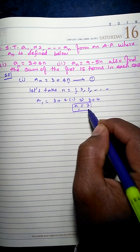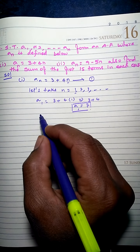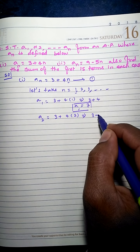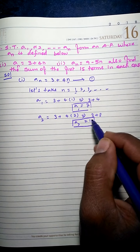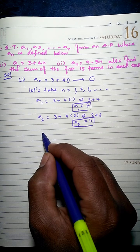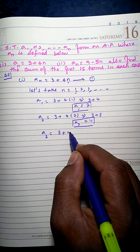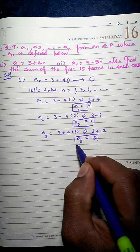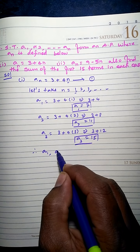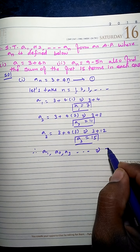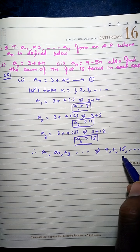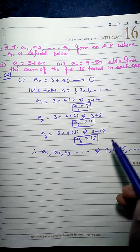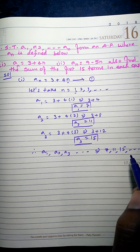a1 = 3 + 4×1 = 3 + 4 = 7. So the first term is 7. Applying n = 2: a2 = 3 + 4×2 = 3 + 8 = 11, the second term. Applying n = 3: a3 = 3 + 4×3 = 3 + 12 = 15, the third term. So we got the sequence 7, 11, 15. Now we have to prove that this forms an AP.